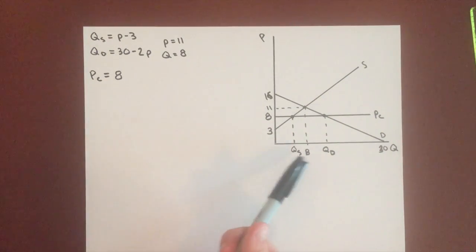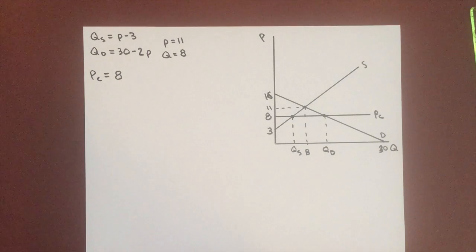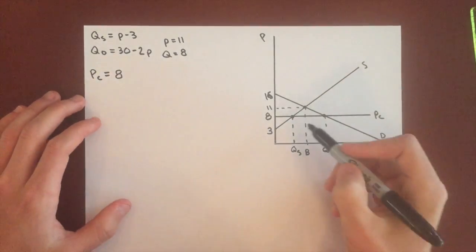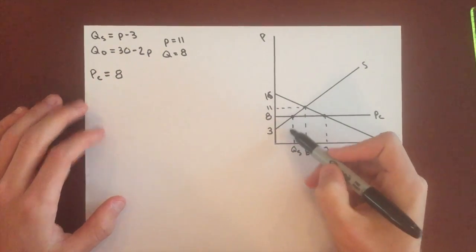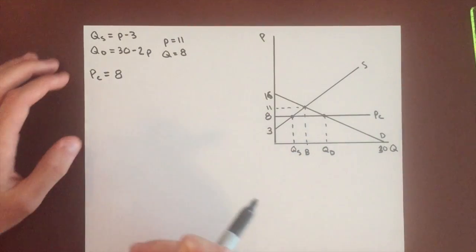So now that we have our price ceiling in place, we can find the new quantity. So quantity will be equal to this quantity supplied value since it's the lesser of quantity demanded and quantity supplied.